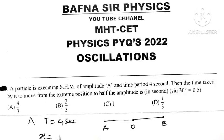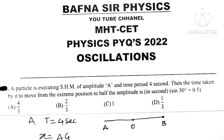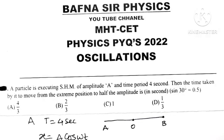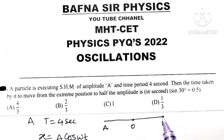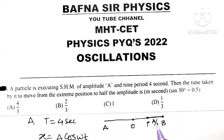Displacement of particle is given by formula X is equal to A cos of omega T. And starting from extreme position, it will reach to a point P which is half of the amplitude. Distance between mean position and extreme position is amplitude.